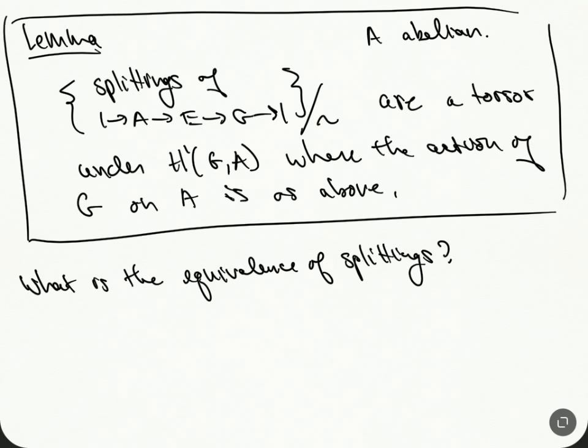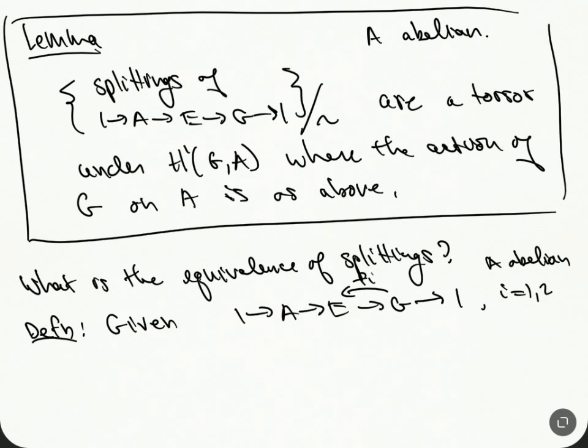So what is this equivalence? One thing you could say is that I have to define how to construct a cocycle given two splittings. You could define it after defining the cocycle via the coboundary condition given this lemma. But what I'll say, what it'll amount to is two splittings being equivalent if they're A-conjugate. So the definition says that, given a sequence 1 → A → E → G → 1, and then we'll have two splittings Fᵢ for i = 1 and 2, and A is abelian.